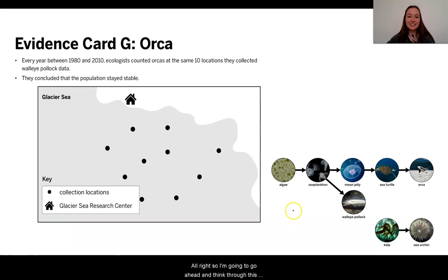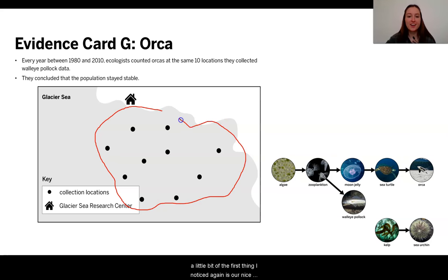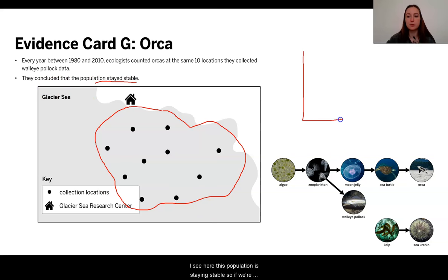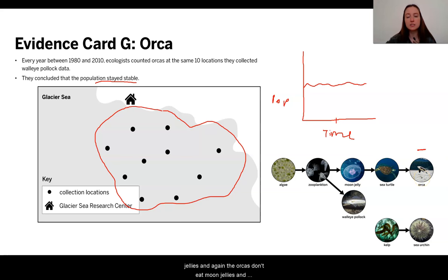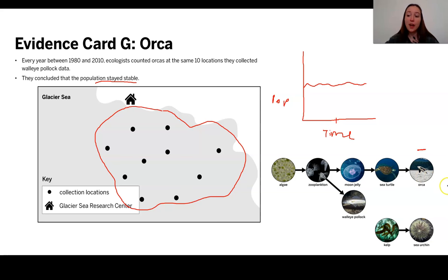I'm going to go ahead and think through this. The first thing I noticed is our nice large sample size — we have lots of different population samples all over the glacier sea. I see here that this population is staying stable, so on our time versus population graph, the population seems to be staying stable throughout the whole time they were looking at the orcas. Now, the orcas don't eat moon jellies, and the moon jellies don't eat orcas. But they are the consumer population of the sea turtles, which are, in turn, the consumer population of the moon jellies, so that might be playing a role here.